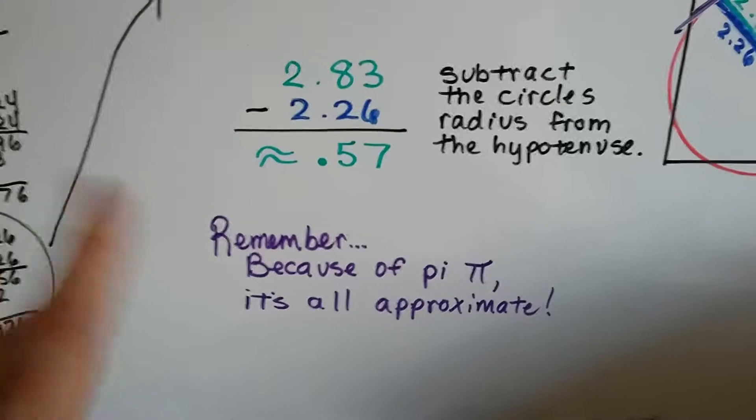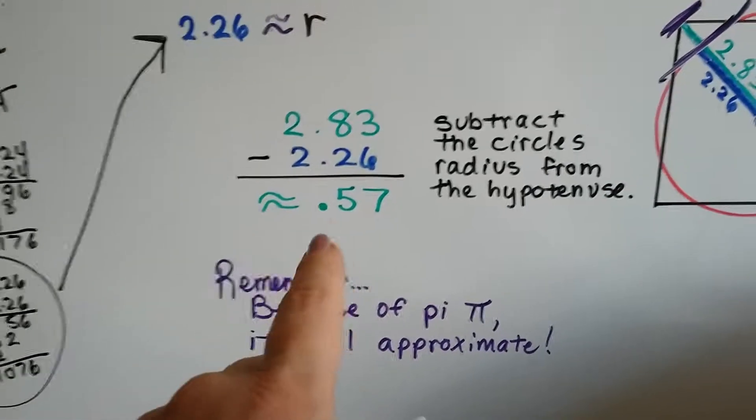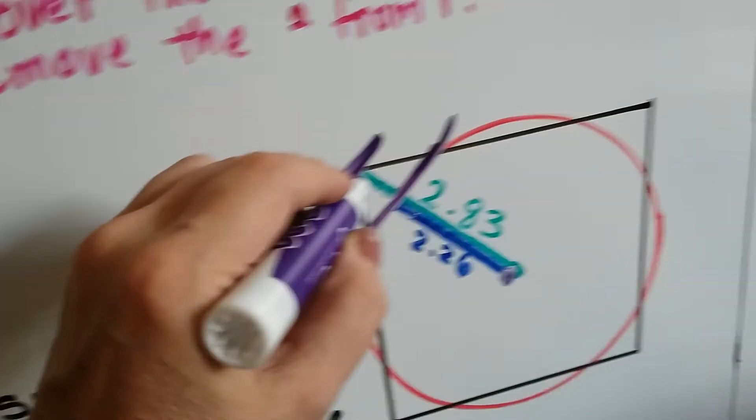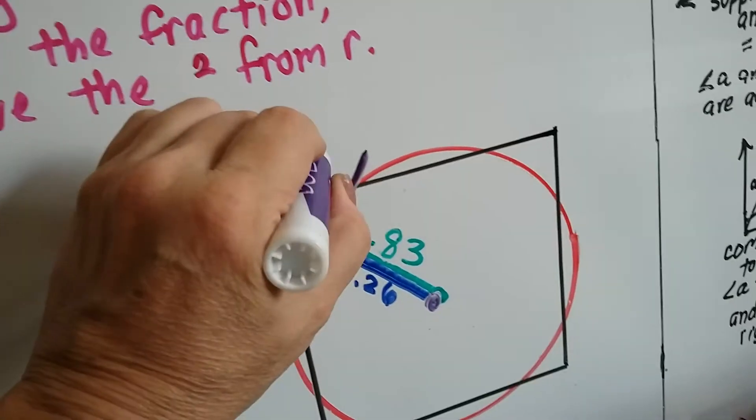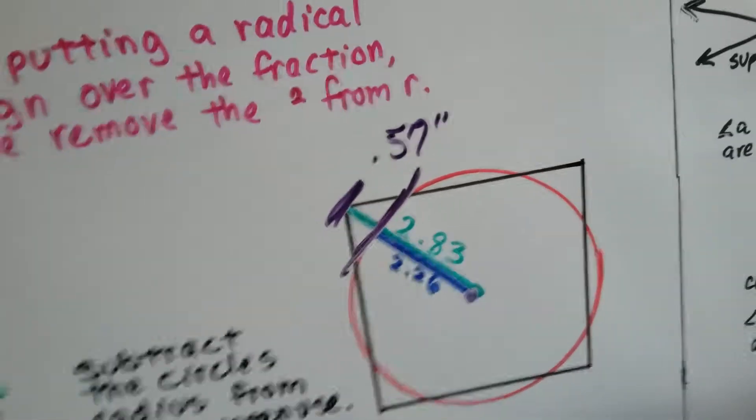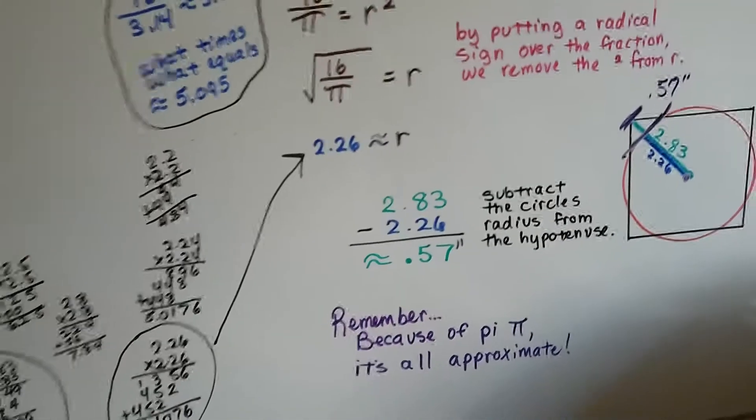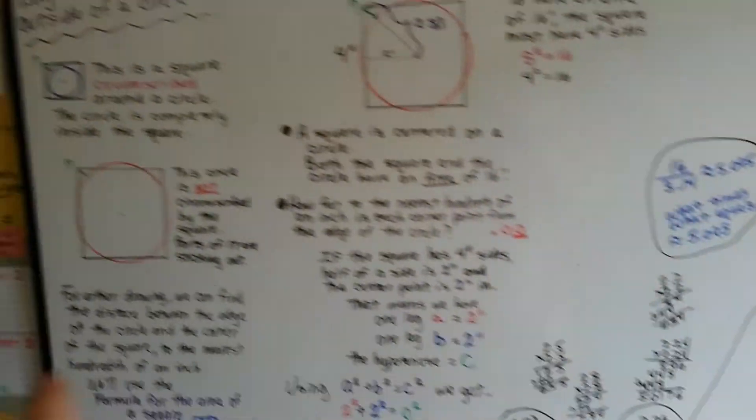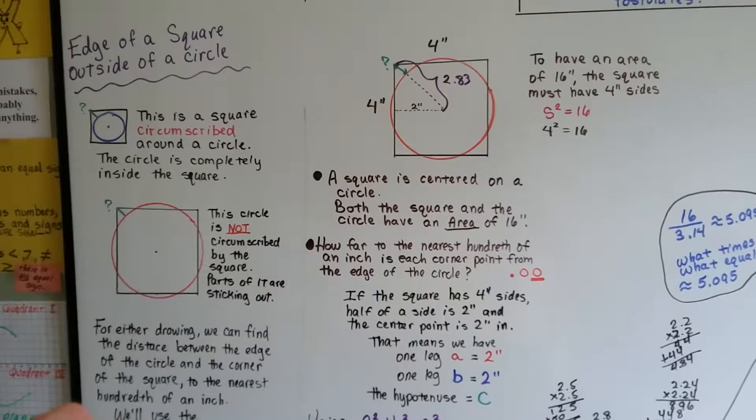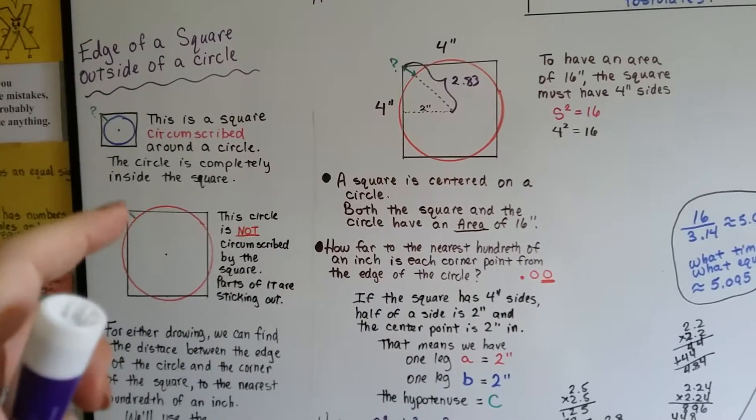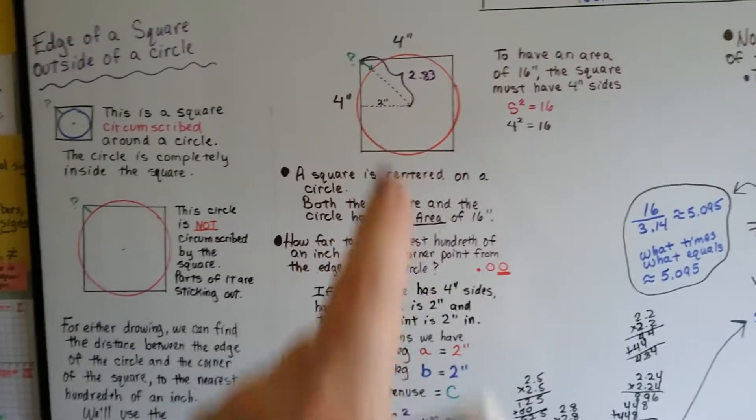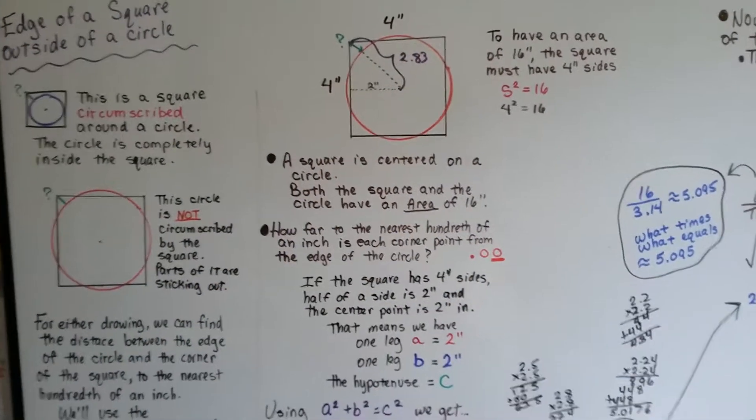So if this whole thing is 2.83 and this is 2.26, all we have to do is subtract. We subtract the circle's radius from the hypotenuse and we get approximately 0.57. So remember, because of pi, it's all approximate. So we know that's approximately 0.57 inches in between here. That's the measure of that space right there. And like I said, we can do this whether the circle is circumscribed or not. It doesn't matter. As long as there's a little piece sticking out, we can use the Pythagorean theorem and make a triangle and use the area of a circle to figure out what that is.